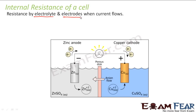Since this resistance is internal to the cell, it is known as internal resistance and is denoted by small r. That is how we differentiate between external resistance in a circuit and internal resistance — internal resistance is always small r and external resistance is always capital R. So the electrodes and the electrolyte both try to provide some resistance to the flow of current.